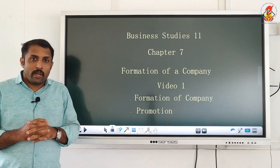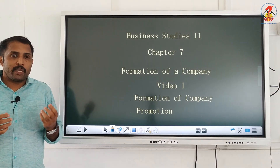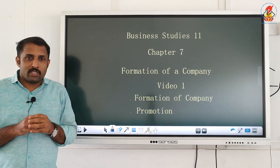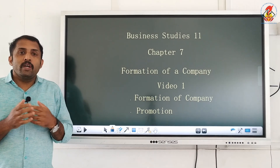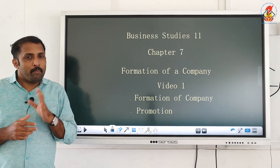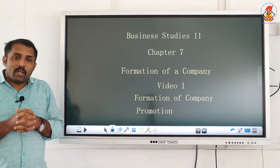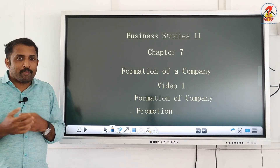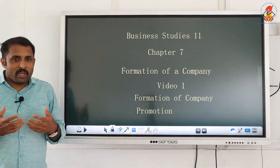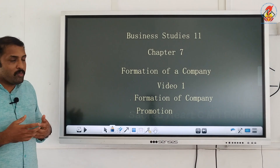We are entering into another topic — Chapter 7 — which is a continuation of the second chapter on forms of business organization. In that chapter we already learned about joint stock companies. In this chapter we will be learning about the formation of a company, and we are taking this chapter a bit early as it is connected with the other chapter.